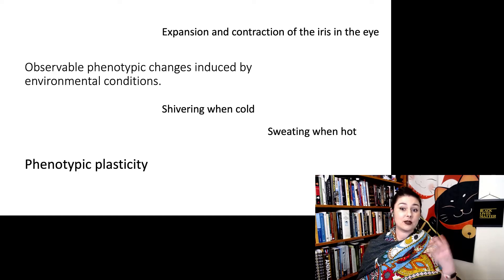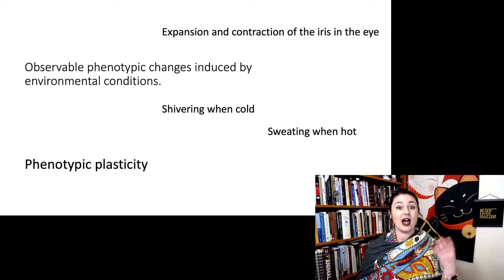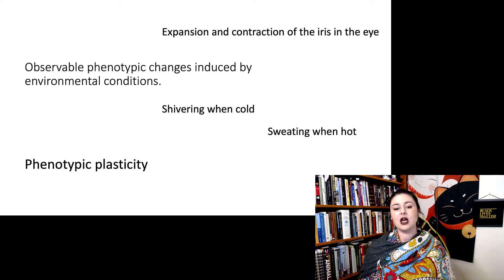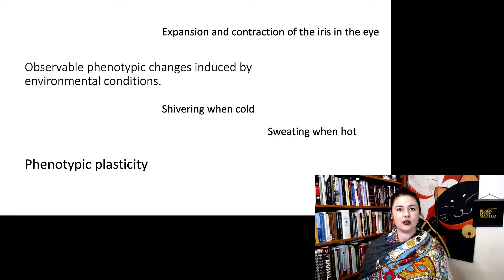So some examples are like the expansion and contraction of the iris of your eye. We can see that when we move from a bright environment to a dark environment, our iris dilates. Also shivering when cold. So when we get cold enough, you notice the hair on your arm stands on end and then we start to shiver.